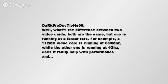DarkProductions500 asks: what's the difference between two video cards that are both the same, but one is running at a faster rate? For example, a 512 megabyte video card running at 600 megahertz, while the other is running at 1 gigahertz. Does it really help with performance in handling more polygons?